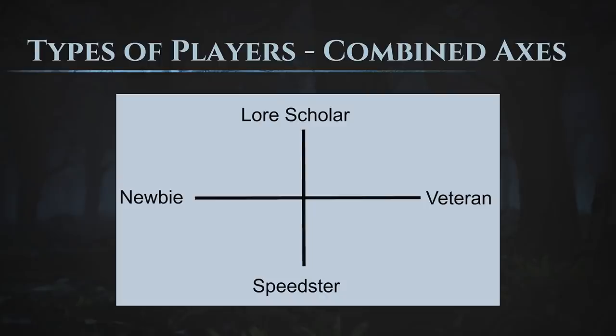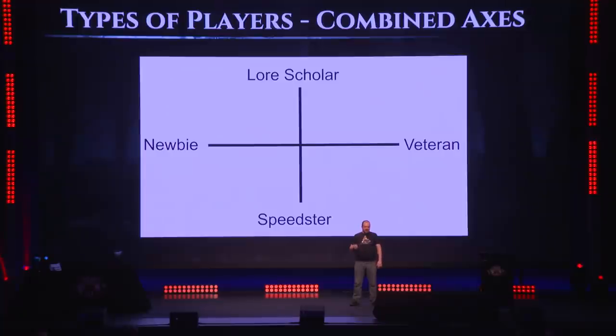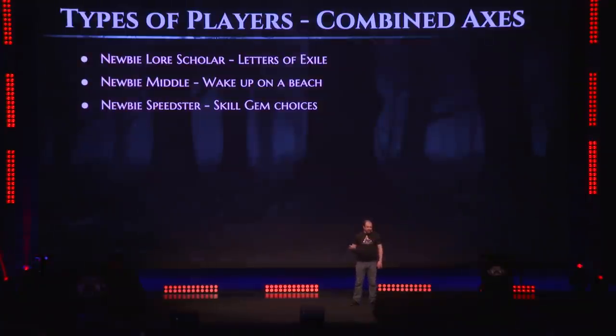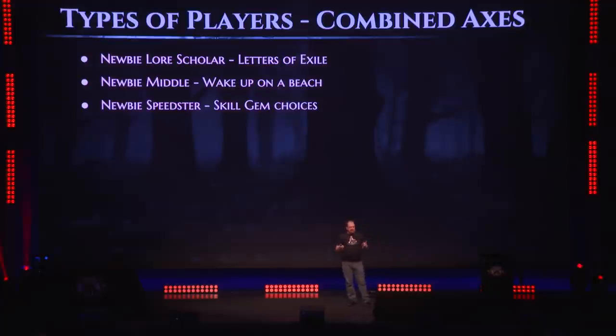When you combine these two axes, you get an interesting cross section. It looks like there are only four types of players, but there are actually many more because the middle area counts too. We actually end up with around nine different player archetypes we have to worry about. A newbie lore scholar — right out of the gate, we give this person the Letters of Exile in Act 1, there's a glyph for you to read. But if you're a newbie who's not a lore scholar, you're not going to read those letters — you're waking up on the beach and that's your story. The newbie speedster gets skill gem choices in Lion's Eye Watch because they need mechanics immediately.